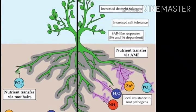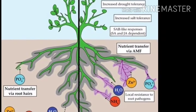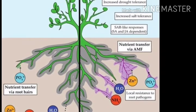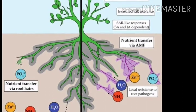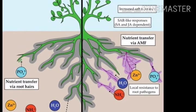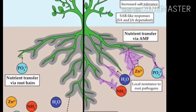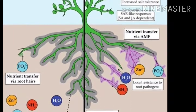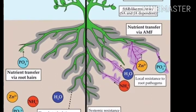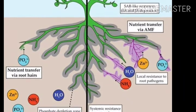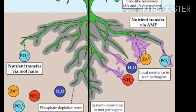We can also classify mycorrhiza on the basis of colonization and non-colonization. Nutrient transfer takes place via roots and phosphate depletion zones occur accordingly. You can recognize the difference between colonizing and non-colonizing areas easily. Mycorrhiza provides increased salt tolerance and drought resistance to plants. When these fungal bio-fertilizers form a relationship with the plant, they help the plant for better growth and also show resistance to root pathogens.